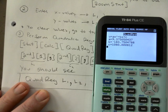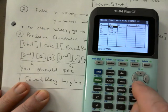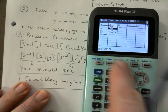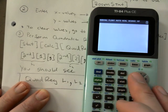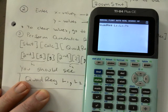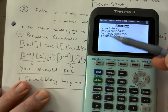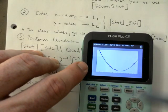If your equation doesn't match, go back to L1 and L2 — press STAT, Edit and check every point you entered. If something is wrong, make the correction and rerun the regression. To rerun it quickly: press the up arrow to recall the previous command, hit Enter to copy it, then run it again with the new points and all the numbers will update. Hit Graph to see the result.